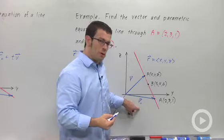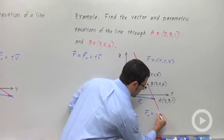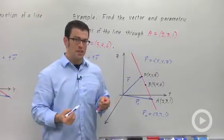And r0 will have components the same as point A. So r0 is (2, 3, 1). But we need a direction vector.